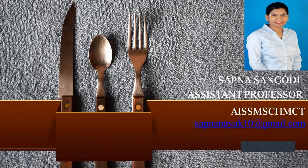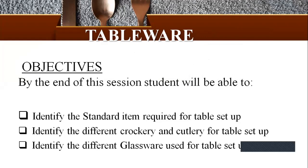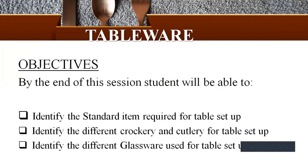I welcome you all for today's session on Tableware. What are the objectives of Tableware? By the end of this session, students will be able to identify the standard items required for table setup. They can identify the different crockery and cutlery for table setup. For example, they can identify the difference between a full plate, half plate, and quarter plate. They can also identify the difference between a dessert spoon, soup spoon, and all-purpose spoon. They can also identify the different glassware used in a table setup in a five-star hotel.